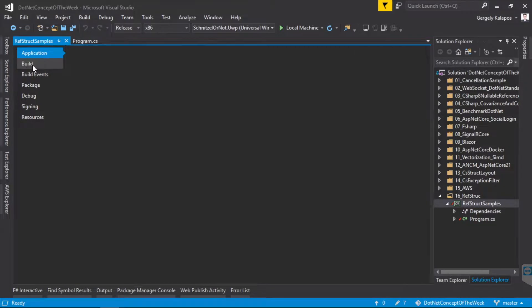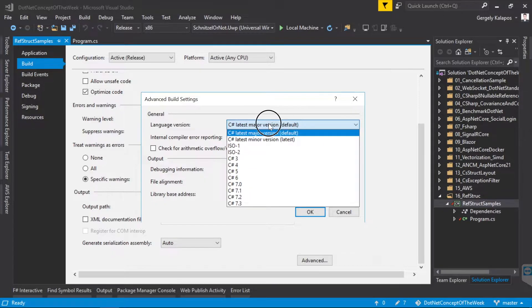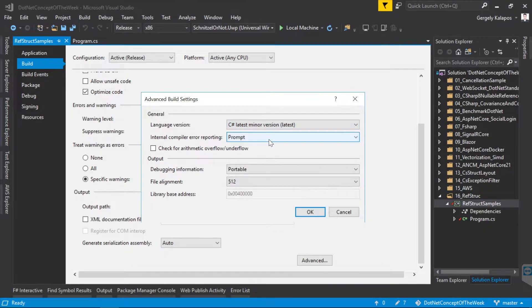You can do this on the build tab. Here I click advanced and with this drop-down I can make the necessary change. So instead of latest major, I select latest minor version.